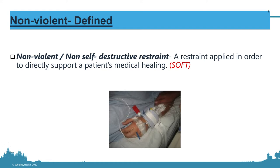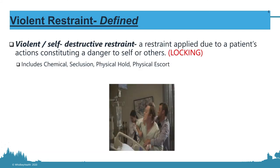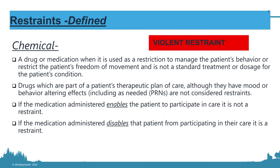Nonviolent restraints are basically soft cuffs or mitts used to protect patients from removing healing devices — most commonly soft restraints on intubated patients. Violent restraints include locking restraints, seclusion, physical holds, chemical restraints, and physical escorts. Note that the rules for nonviolent and violent restraints are different. Chemical restraints, seclusion, physical holds, physical escorts, and locking restraints all fall under the violent category.